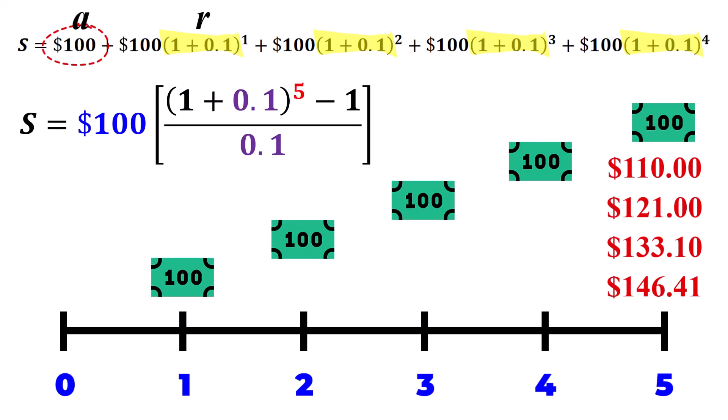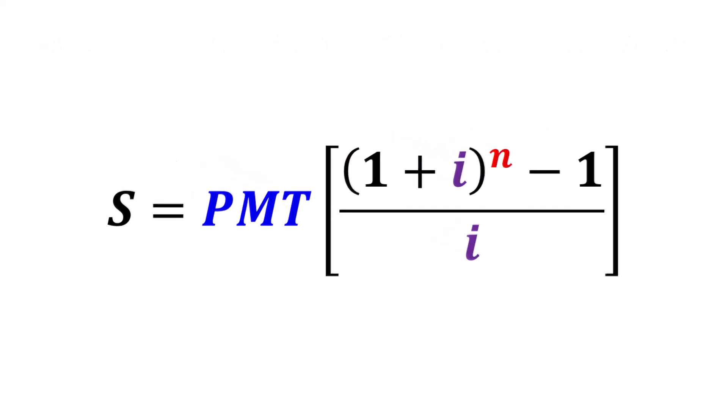To generalize this further, we can replace a with PMT for the recurring payment, and replace r with 1 plus i, where i is the interest rate per compounding period. When we do this, we end up producing the ordinary simple annuity formula.